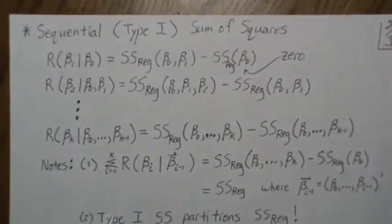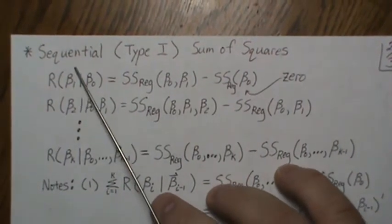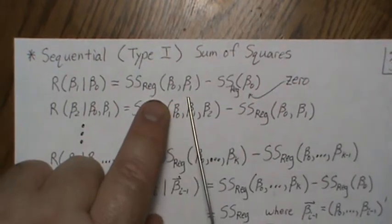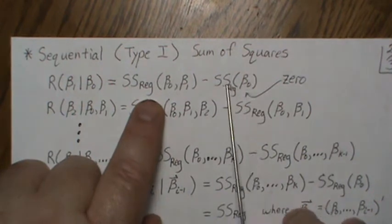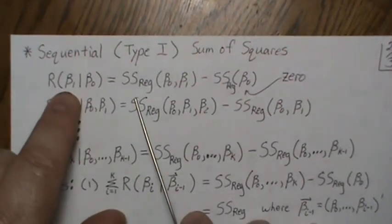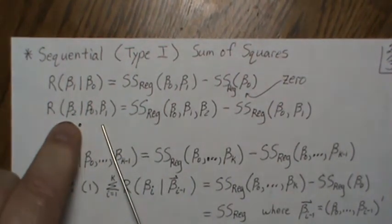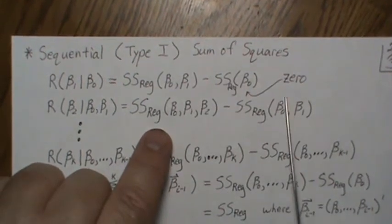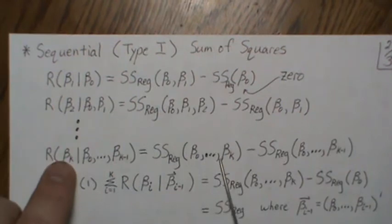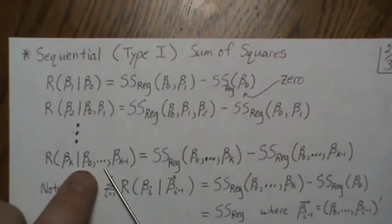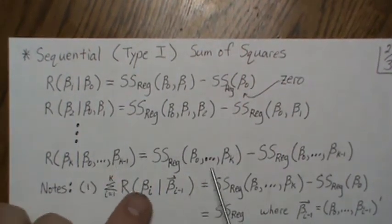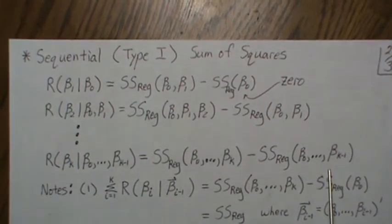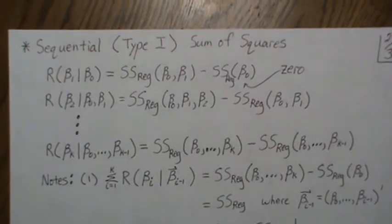So the Type 1 sums of squares is defined as follows — notice there are no vector signs here, so it's individual beta parameters. R(β₁ | β₀) is the SS regression with β₀ and β₁ minus SS regression with just β₀, but remember that's zero, so it's the increase in SS regression when we add β₁ to the model. Then R(β₂ | β₀, β₁) is the increase when we add β₂ over just having β₀ and β₁. We keep doing that until we get to the k-th beta parameter — R(βₖ | β₀, ..., βₖ₋₁) — which is the increase in SS regression when we add that one beta parameter over all the previous betas. That's the Type 1 sum of squares.